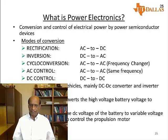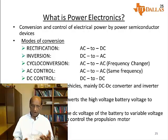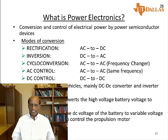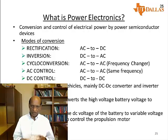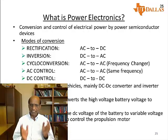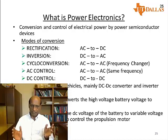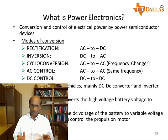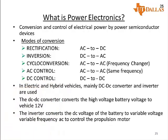Cycloconversion or cycloconverters convert AC to AC of fixed frequency, or as matrix converters, of variable frequency. AC control converts AC voltage of a certain value to another AC voltage of another value at the same frequency. DC control, or DC conversion, can be a step-up DC-DC converter called a boost converter, or a step-down DC-DC converter called a buck converter. The power semiconductor devices in all these applications are used as switches.